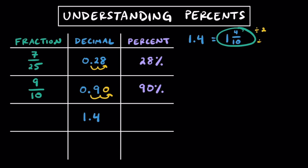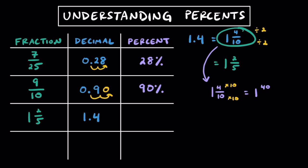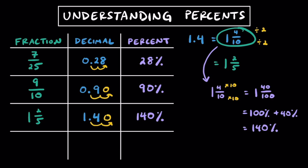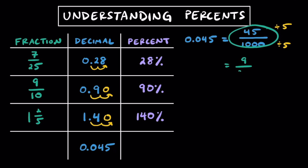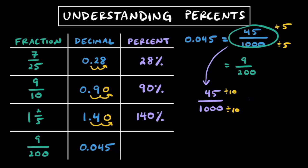Looking at this decimal of 1.4, we can read this as 1 and 4 tenths, and we can divide top and bottom by 2 to get 1 and 2 fifths. To get it to be a percent, we need it to be per 100, so multiplying top and bottom by 10, we get 1 and 40 one hundredths. The one whole represents 100%, and the 40 per 100 represents 40%, so together this is 140%. Let's look at a small decimal like 0.045. Reading this properly, this is 45 one thousandths, and dividing top and bottom by their GCF of 5, this is 9 over 200. To get this to be a percent, we divide top and bottom by 10 to get 4.5 per 100, which is 4.5%.